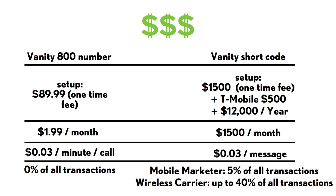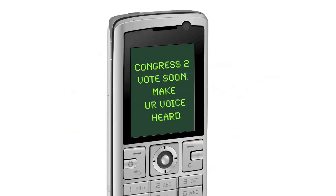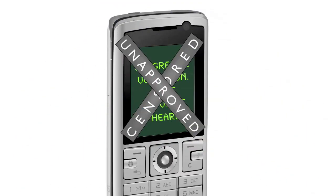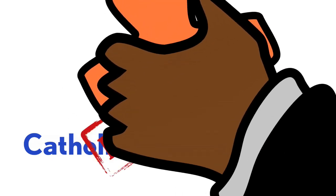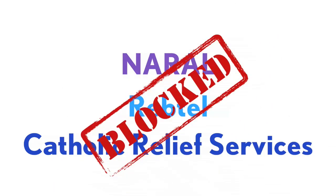With an 800 number, you can pretty much do whatever you want with it — anything you can do with a regular phone number, you can do with an 800 number. However, with a shortcode, companies can cut you off at any time for any reason. That's exactly what happened to organizations like NARAL, Rebtel, and Catholic Relief Services, just to name a few. They were all doing something that wireless carriers decided they didn't like, and all of a sudden they received word that their shortcodes were going to be cut off.